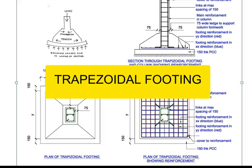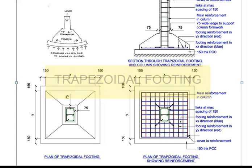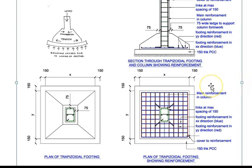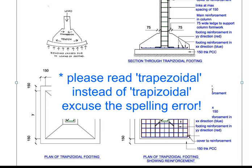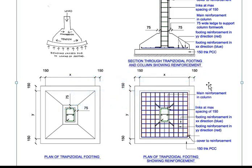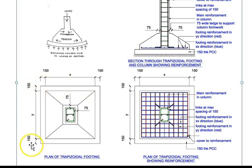Hello students, and welcome to another video lecture from Architects Academy. Today we are going to discuss trapezoidal footing and the principle behind it. In a frame structure, loads are carried by the columns and then passed on to the foundation in the form of a footing. What you are seeing here is a plan of a trapezoidal footing, showing the reinforcement and a section through it.